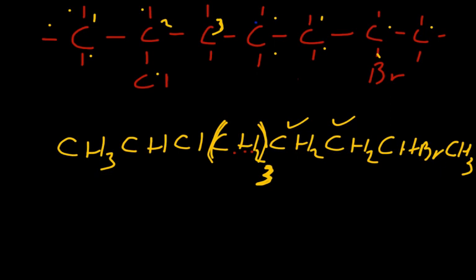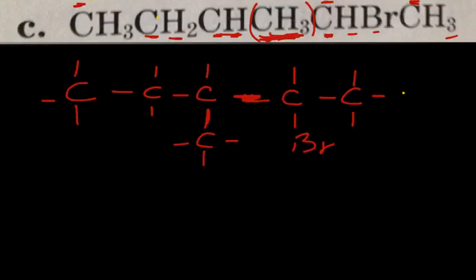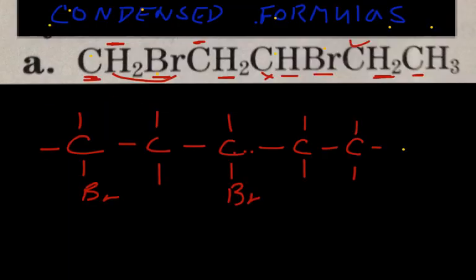Otherwise, this is a pretty simple topic. You're using your common sense — carbon forms four bonds, halogens and hydrogens form only one, and you go from there. As always, hard work and sacrifice equals success. Study, study, study. Take care.